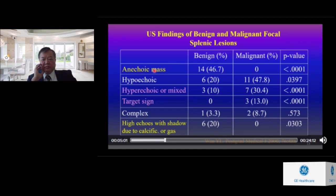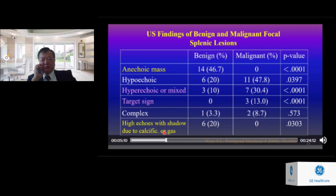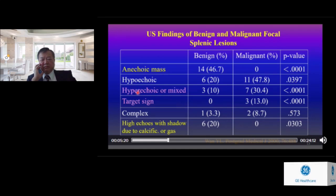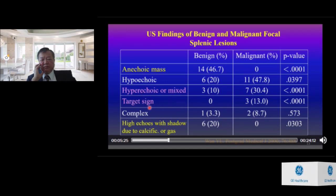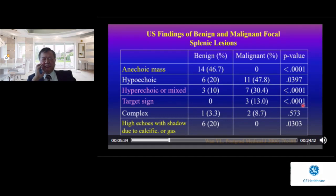When the mass is anechoic, or when the mass is associated with high echo with shadowing due to calcification or gas, those lesions are significantly more likely to be benign. When lesions are hyperechoic, mixed echoic, or associated with target signs, those lesions are more likely to be malignant with statistical significance.